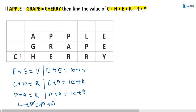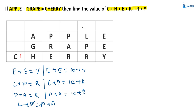Since L cannot equal A, either there is a carryover from the first column to the second, or from the second column to the third — but only one of these two columns carries. Suppose there is no carryover from the first place to the second, and the carryover from the second to the third is plus one, then the sum of E plus E must be a single digit. If the sum of these two values is a single digit, that means E plus E equals Y.